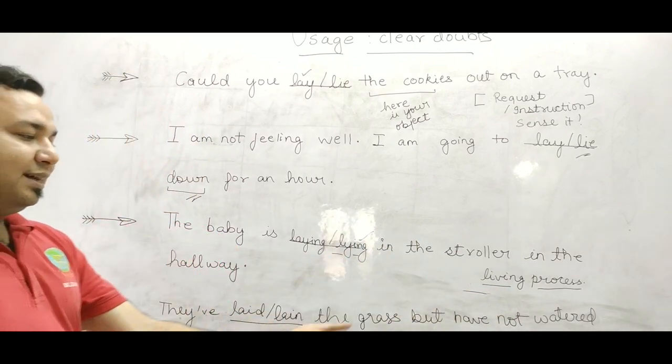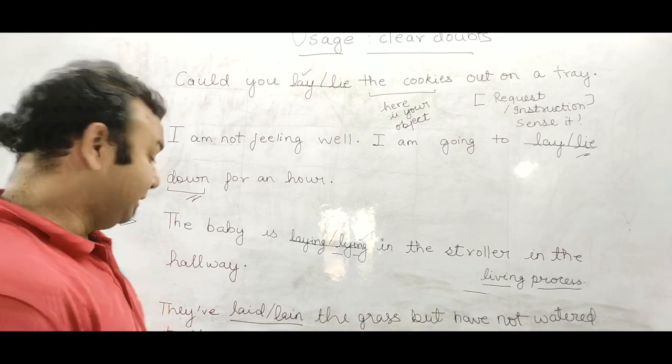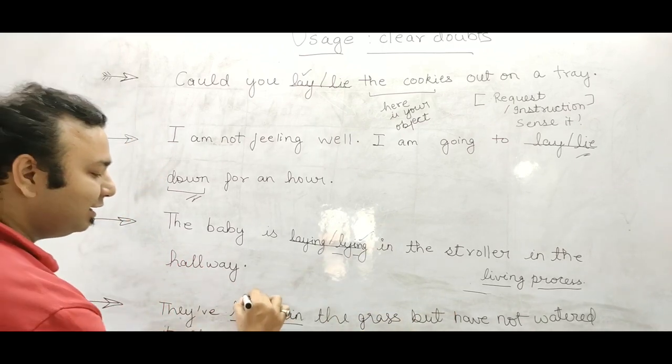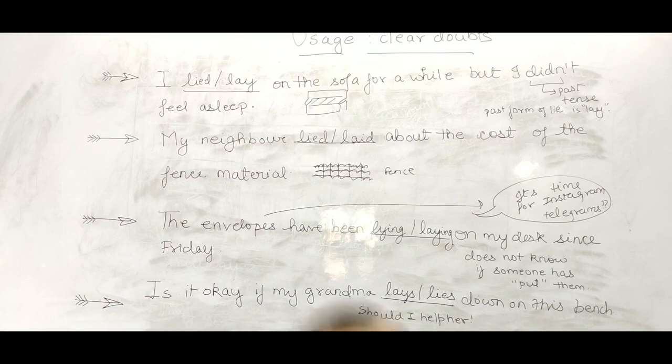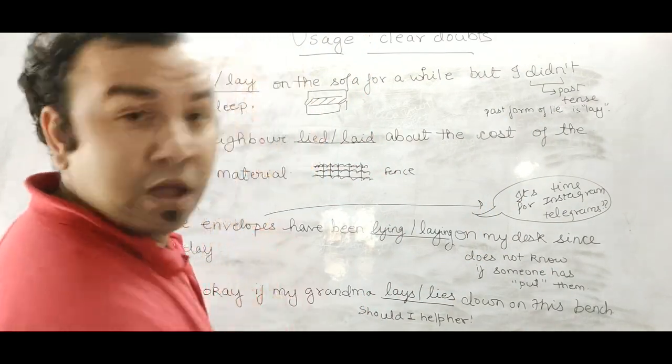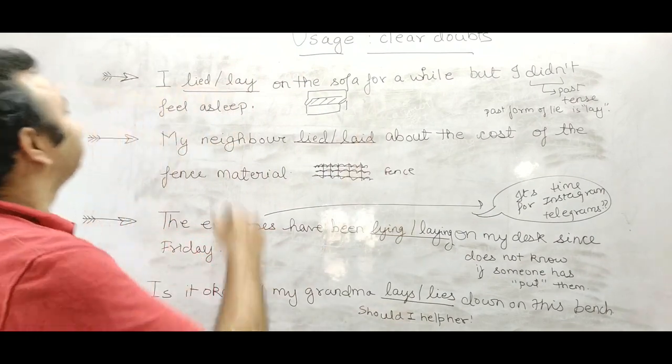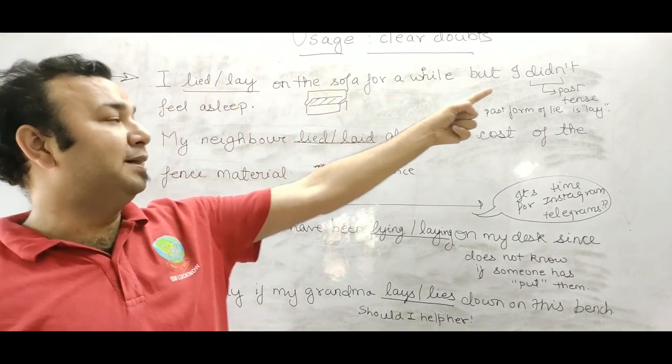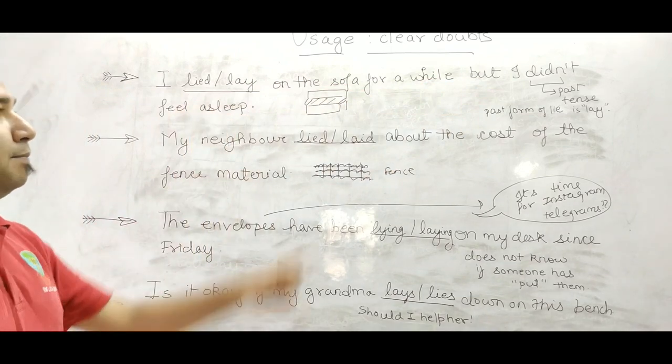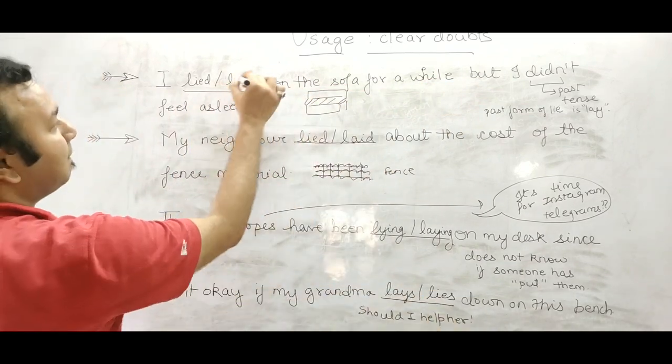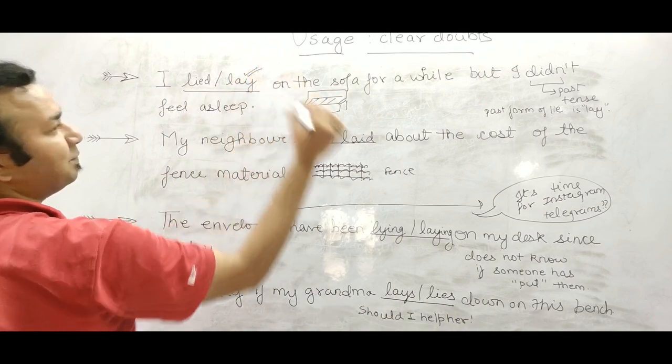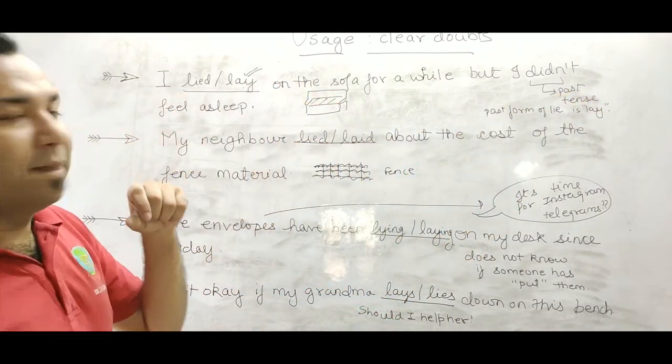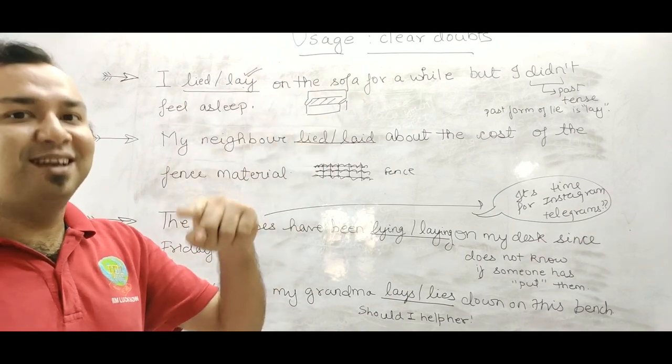They have laid, lain, the grass but have not watered yet. So what are you doing here? Go and water. So they have laid. I lie on the sofa for a while but I didn't fall asleep. Sofa. Lied. Past tense. Lied. Past. Lied. Past. Remember lied ka past lied hota hai.